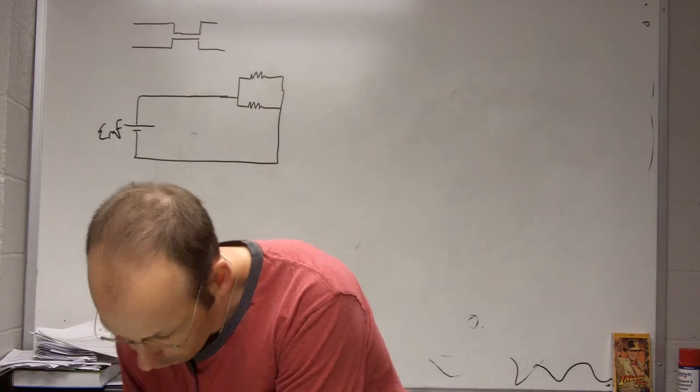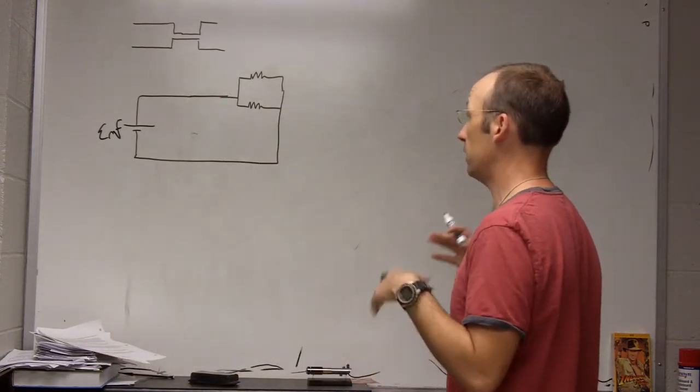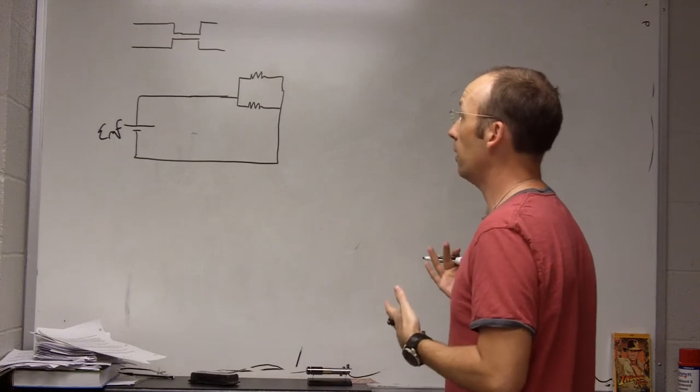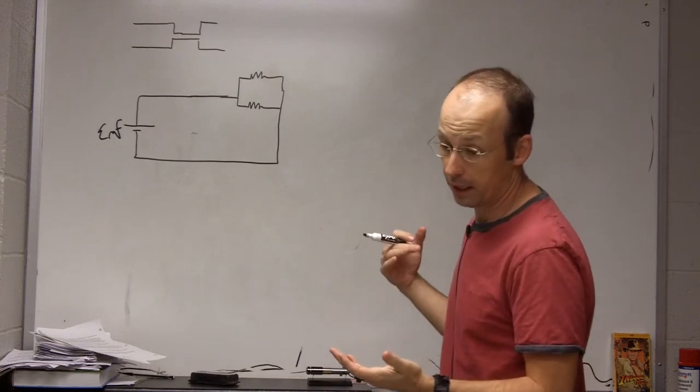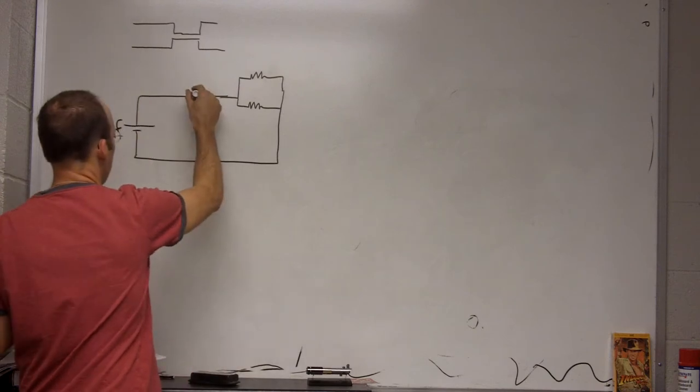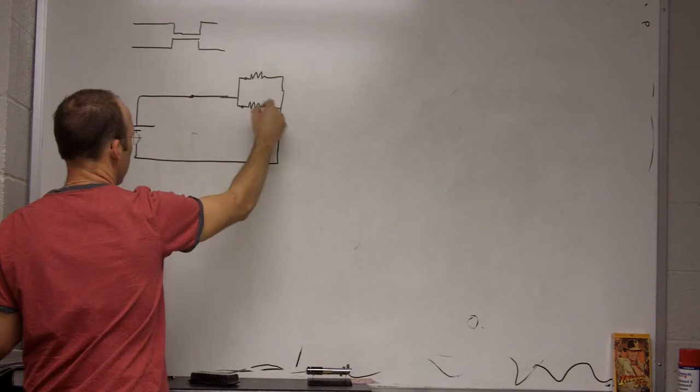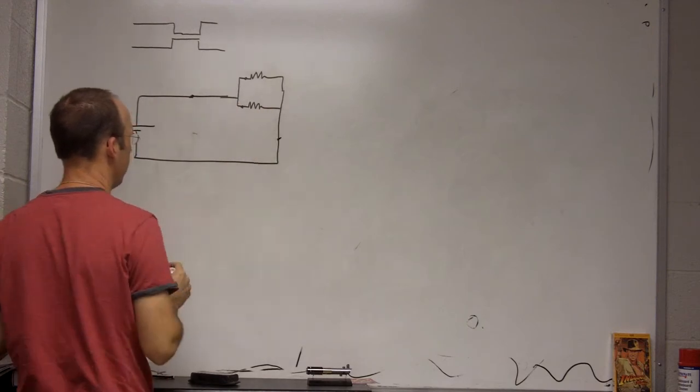And so in this case, we're going to assume the contribution to the change in potential due to these thicker wires is negligible. All that matters is the thinner wire. So, the first question says, if you measured the current in these different locations, what would you get? If I measured the current, let's say right here, right here, right here, and right here.